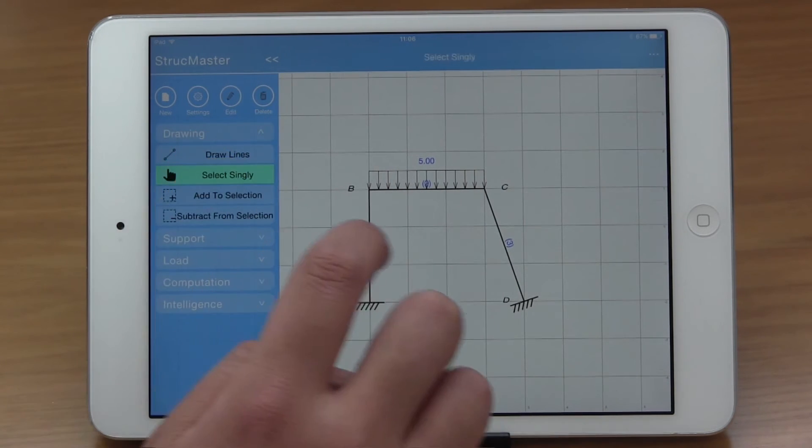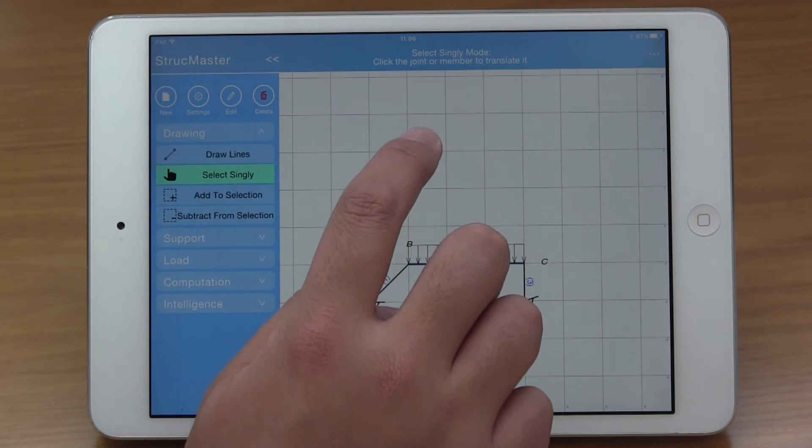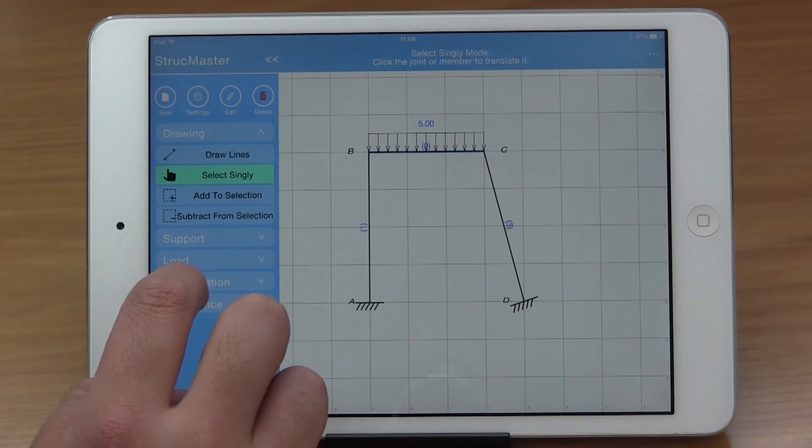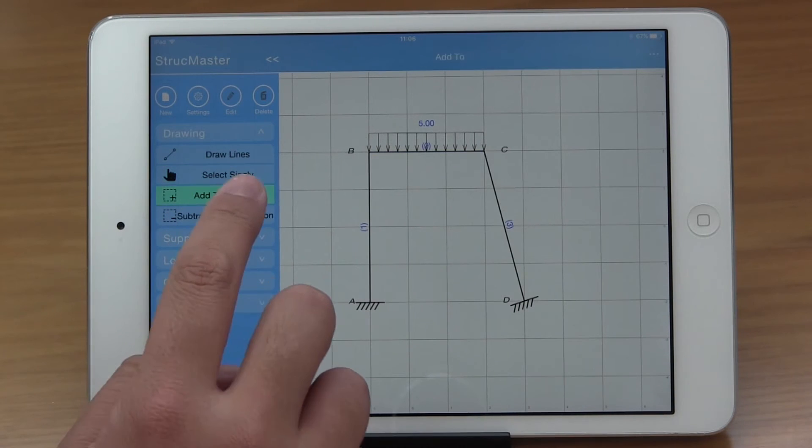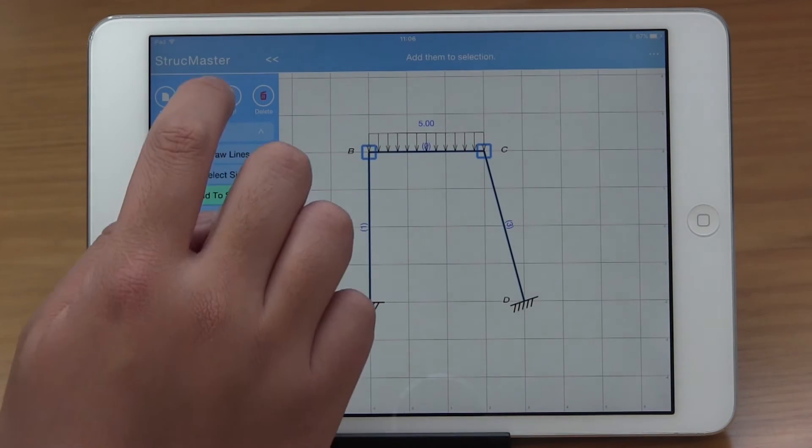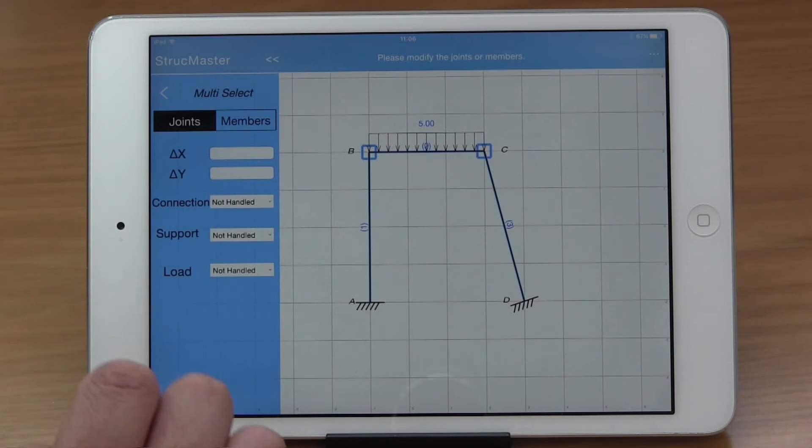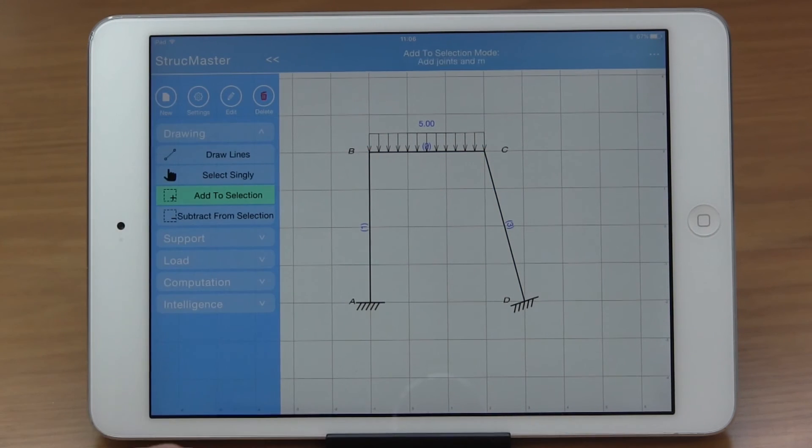If you want to change the position of a member or joint, you can do that in Single Select mode. In Multi Select mode, you can select several members and joints and edit them together, just like in AutoCAD.